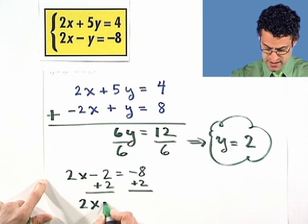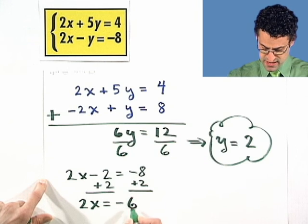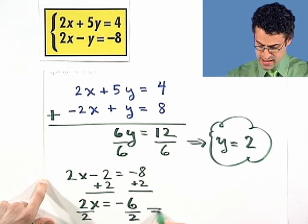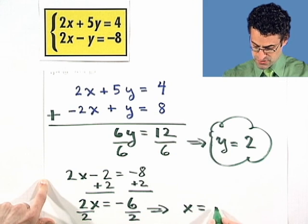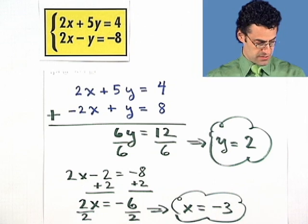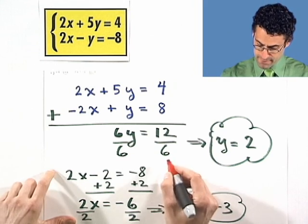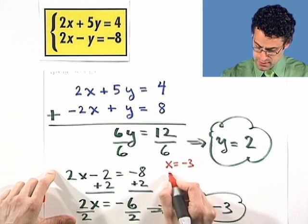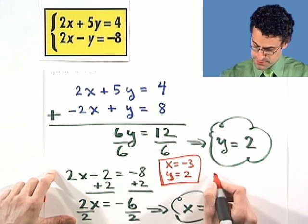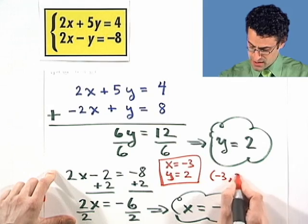So I see 2x equals negative 6. I divide both sides by 2 to undo the multiplication of 2, and I see that x equals negative 3. So the answer is x equals negative 3, y equals 2. Or if you want to write it as a pair, you can write it as negative 3 comma 2.